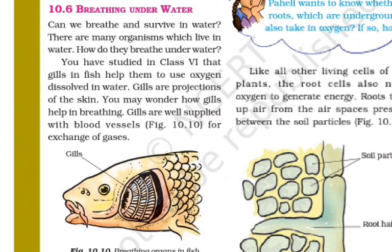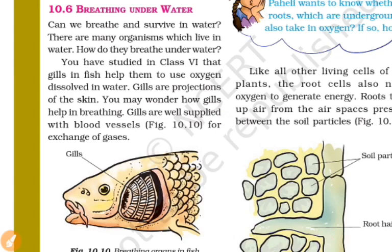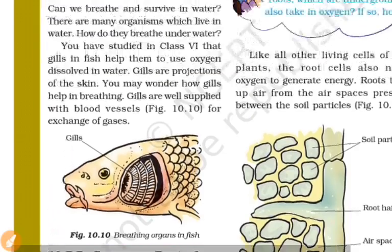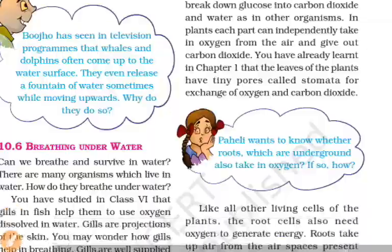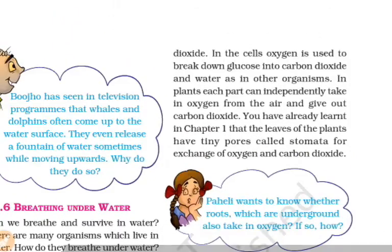Aquatic organisms breathe under water. There is dissolved oxygen in water. Fish and other water-dwelling organisms breathe through gills. The gills are supplied with blood vessels for the exchange of gases.